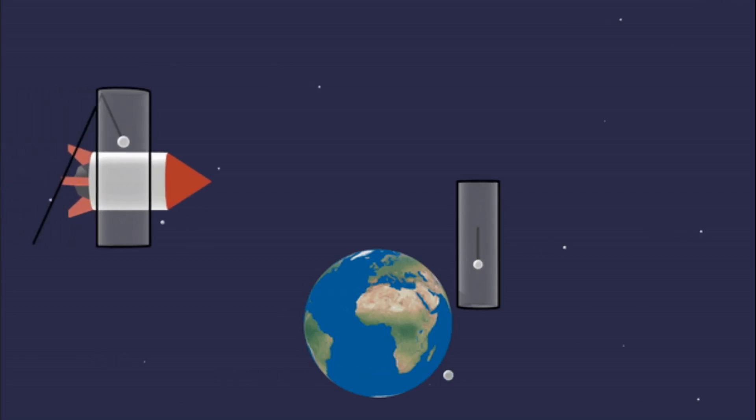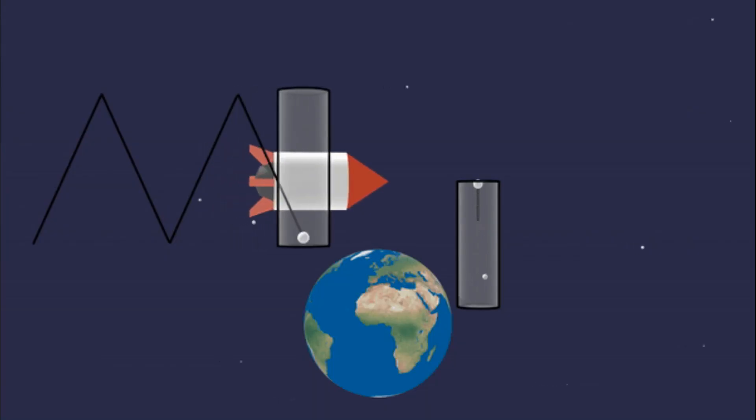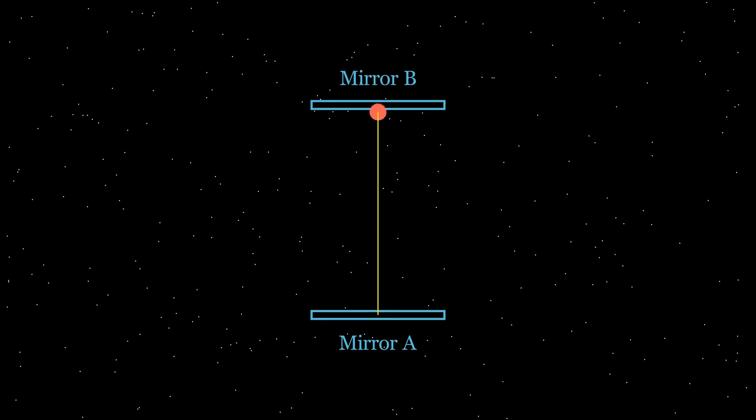We begin by exploring the theory of special relativity. Imagine a spacecraft gliding silently through the vastness of space. Inside, a light clock ticks when a photon bounces between two mirrors that are separated by L distance apart.